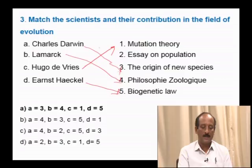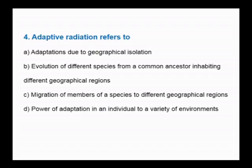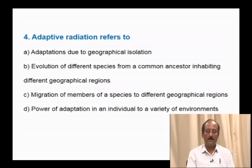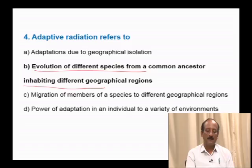Question number 4: Adaptive radiation refers to — adaptations due to geographical isolation; evolution of different species from a common ancestor inhabiting different geographical regions; migration of members of species to different geographical regions; power of adaptation in an individual to a variety of environments. According to the definition of adaptive radiation, the correct answer is: evolution of different species from a common ancestor inhabiting different geographical areas. The example is Darwin's finches and marsupials of Australia.